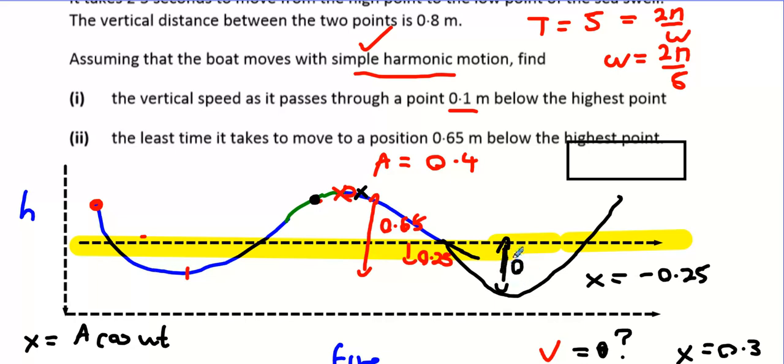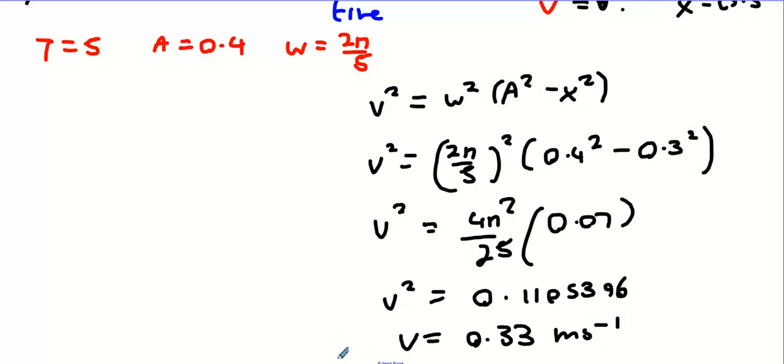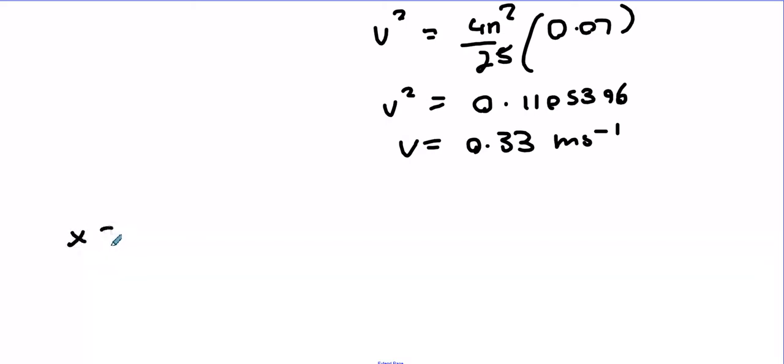So x equals minus 0.25. x = A cos(ωt), where A is 0.4, ω is 2π over 5, and this is t. That equals minus 0.25. Now please remember ASTC.